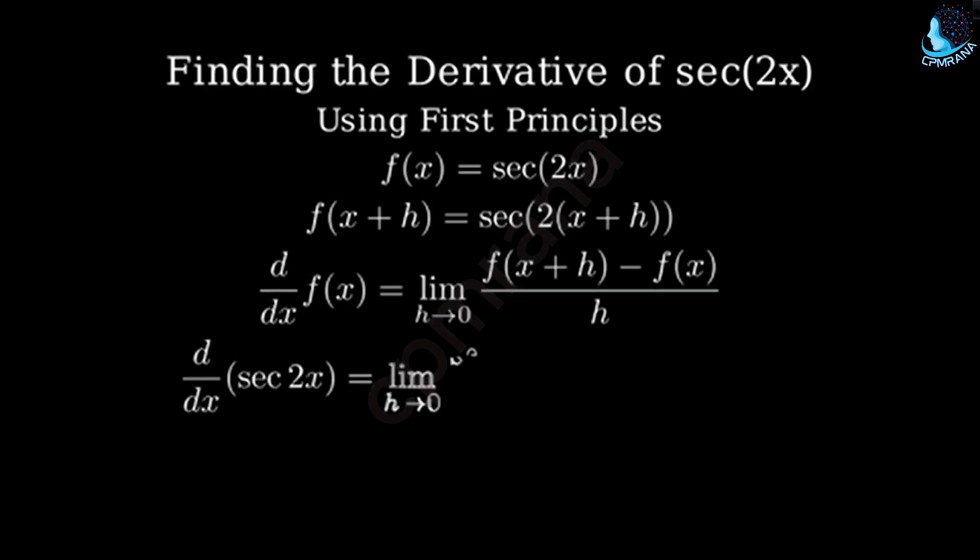Substituting our function, we get the limit as h approaches 0 of secant of 2 times x plus h minus secant of 2x, all divided by h.